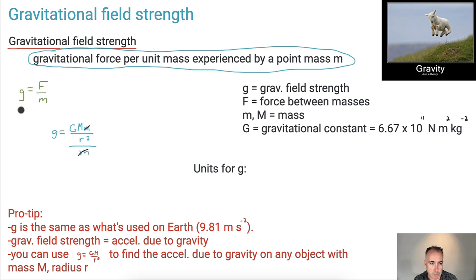So you end up with then that g, this lowercase g, equals G times M over r squared. Did you see how we get that?